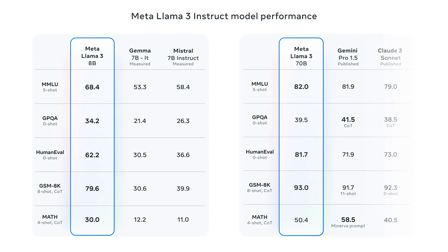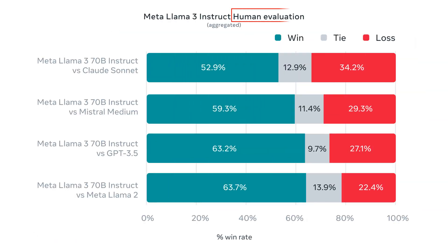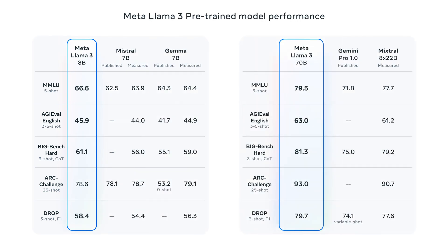Here is the performance comparison of the Llama 3 instruction-tuned model with proprietary LLMs like Gemini Pro 1.5 and Claude 3 Sonnet, and open-source LLMs like Gemma and Mistral. Llama 3 outperforms existing open-source LLMs on all five benchmarks and outperforms proprietary LLMs on three out of five benchmarks. In human evaluation, the Llama 3 instruction-tuned model outperforms Claude 3 Sonnet, Mistral, GPT-3.5, and Llama 2. Similarly, the Llama 3 pre-trained model outperforms both proprietary and open-source LLMs on most benchmarks.